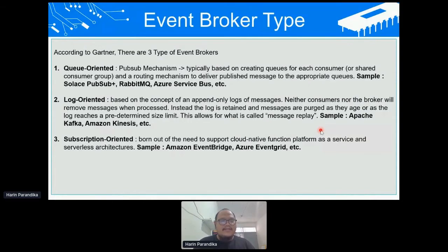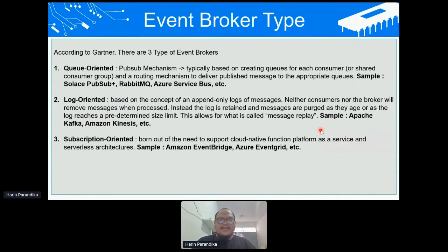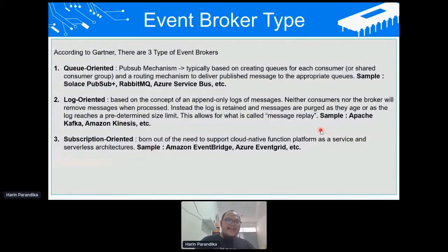The second type is log-oriented, based on an append-only log of messages. Neither the consumer nor the broker removes the message after it has been processed; the message is removed after a certain time period or after reaching a defined limit. Examples include Apache Kafka and Amazon Kinesis. A benefit of log-oriented event brokers is message replay — if you have a new consumer and want to consume old messages, you can go back to a certain point in time and replay from there. The third type is subscription-oriented, born out of the need to support cloud-native functions. Examples include Amazon EventBridge and Azure EventGrid.